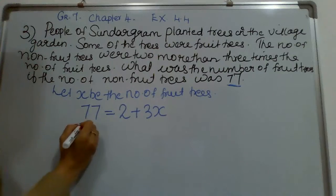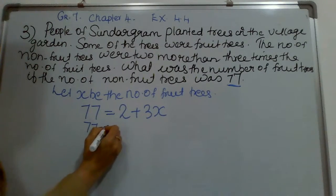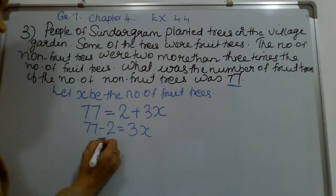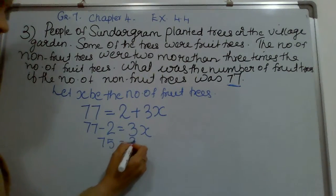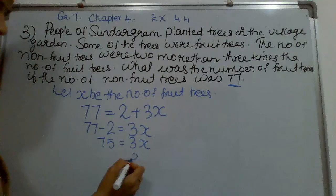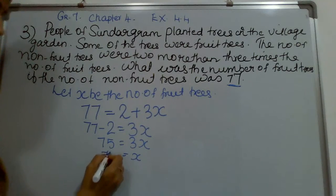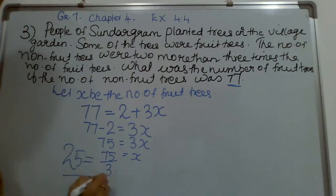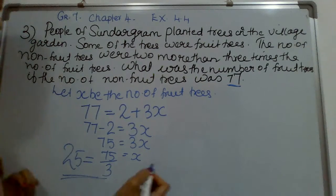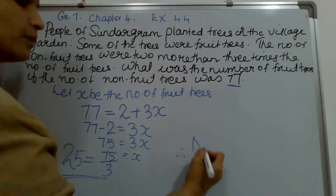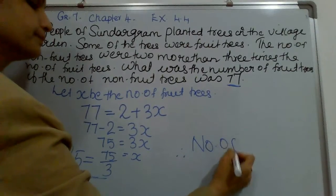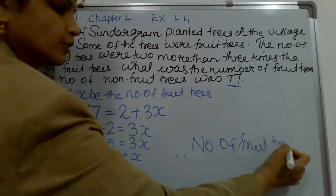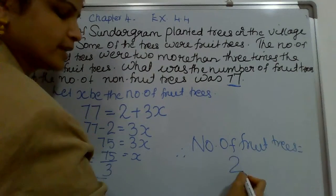We can solve: 77 minus 2 equals 3x. So, 75 equals 3x. Therefore, x equals 75 divided by 3, which equals 25. Therefore, the number of fruit trees is 25.